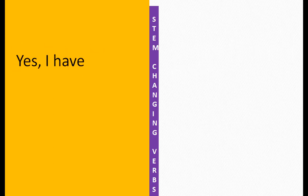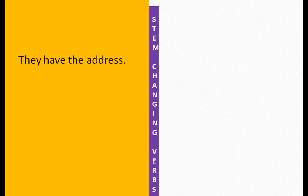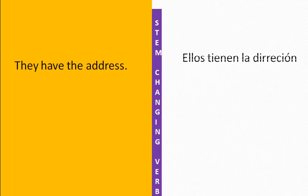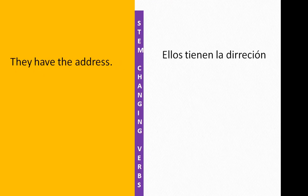'Yes, I have' — SÍ, TENGO. So you can say TENGO or YO TENGO. Next: 'They have the address.' The ELLOS form of TENER is TIENEN. 'Address' is DIRECCIÓN. So: ELLOS TIENEN LA DIRECCIÓN. If you want to know how LA came in, refer to another video on articles in Spanish.